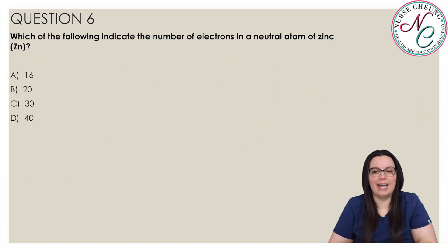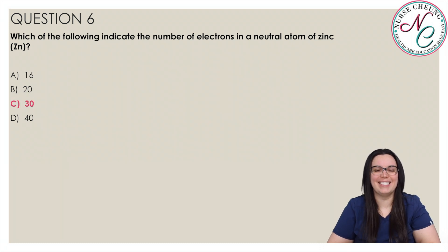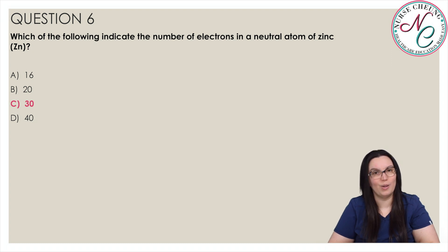Which of the following indicates the number of electrons in a neutral atom of zinc? Is it A 16, B 20, C 30, or D 40? And the correct answer is C 30. Zinc is found in the fourth row of the periodic table with an atomic number of 30. Its atoms therefore have 30 protons. A neutral atom of zinc would have the same number of electrons as protons, thus 30 electrons.